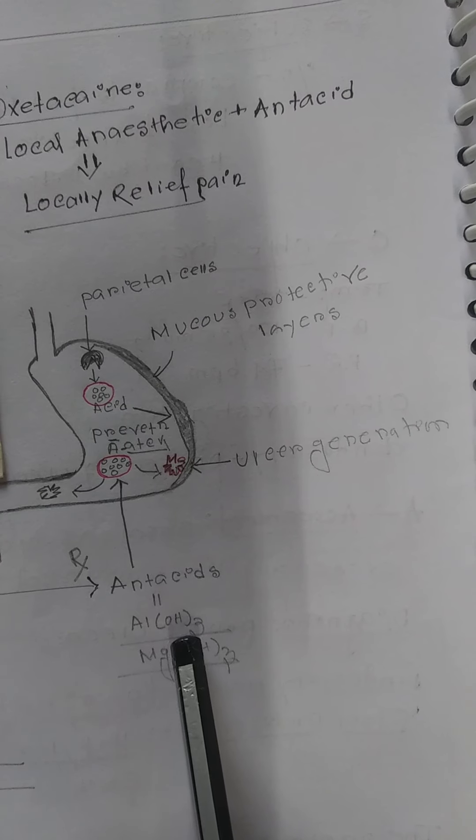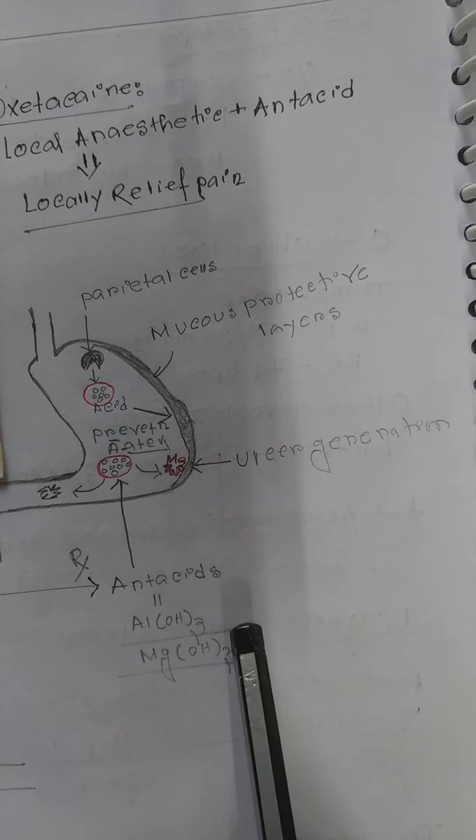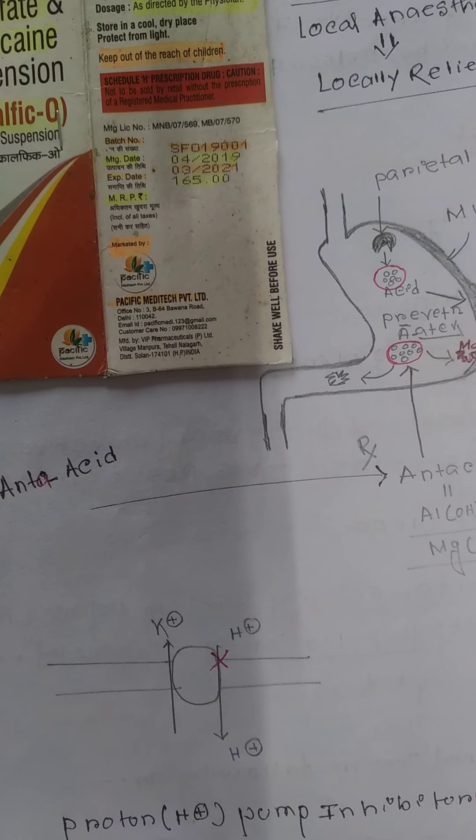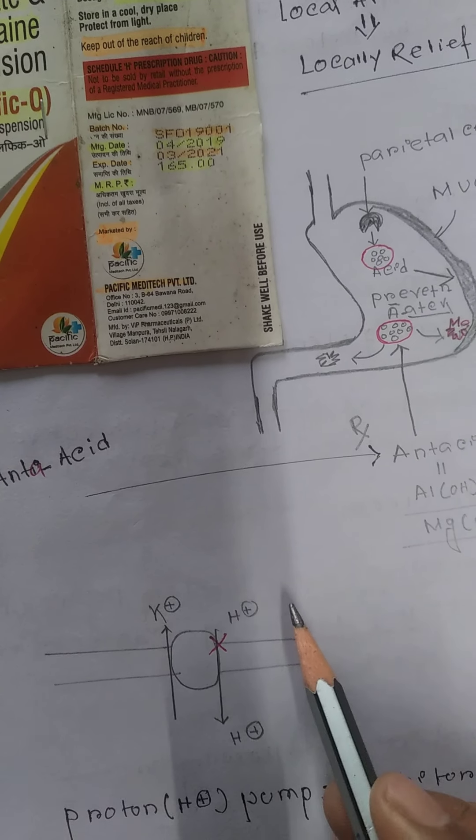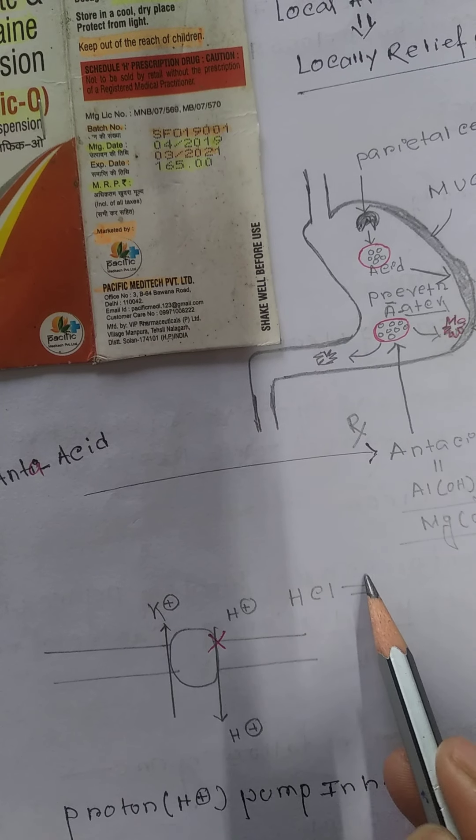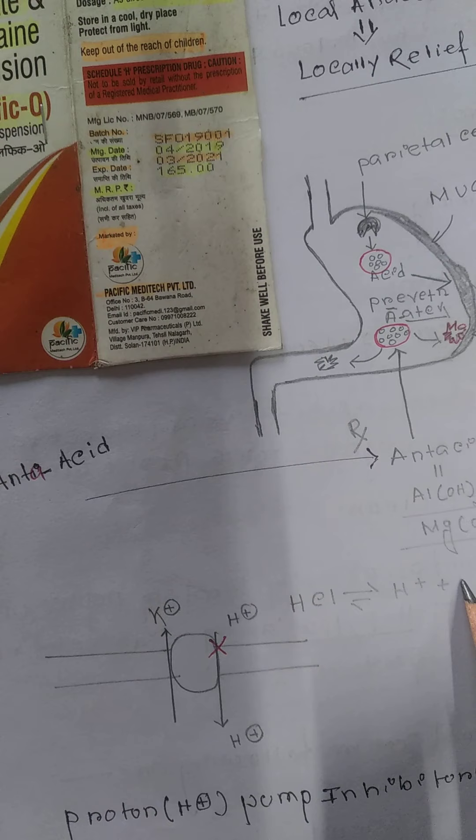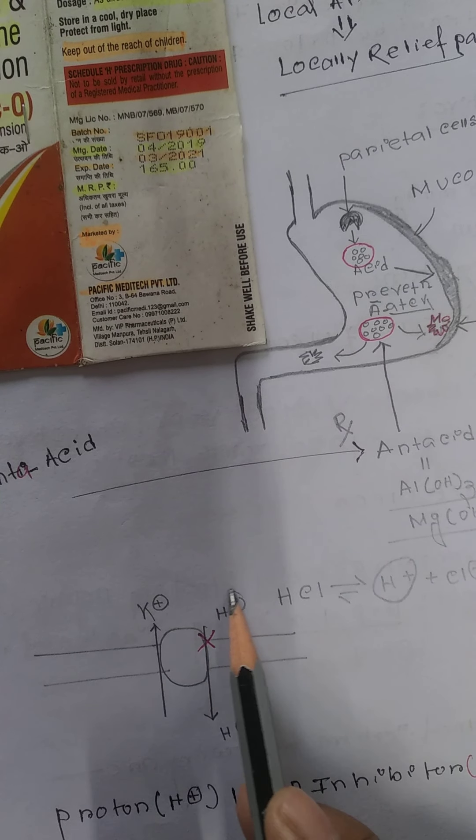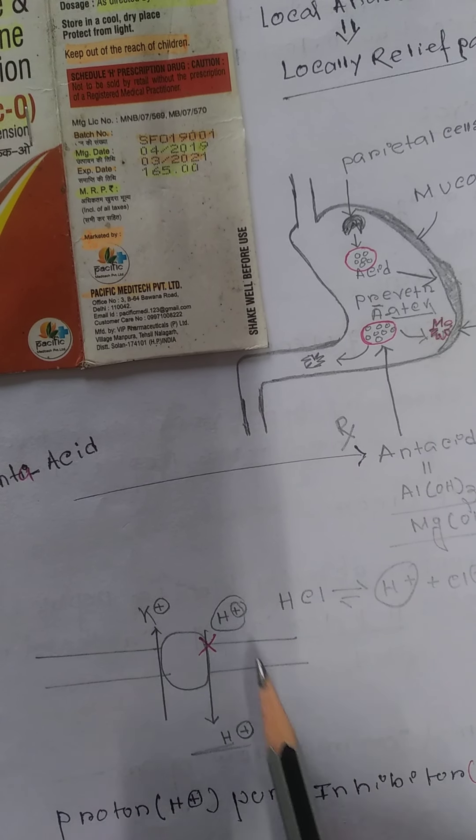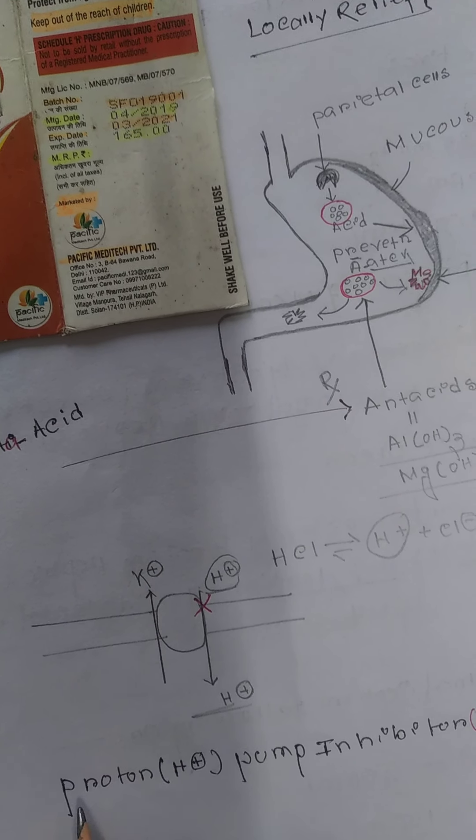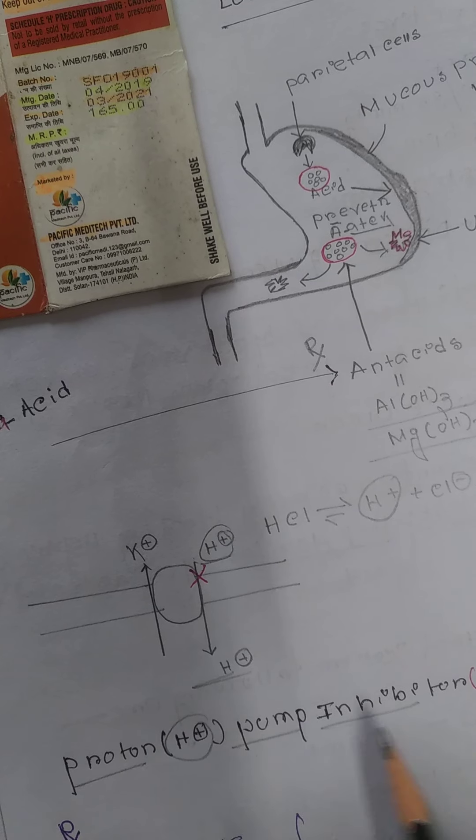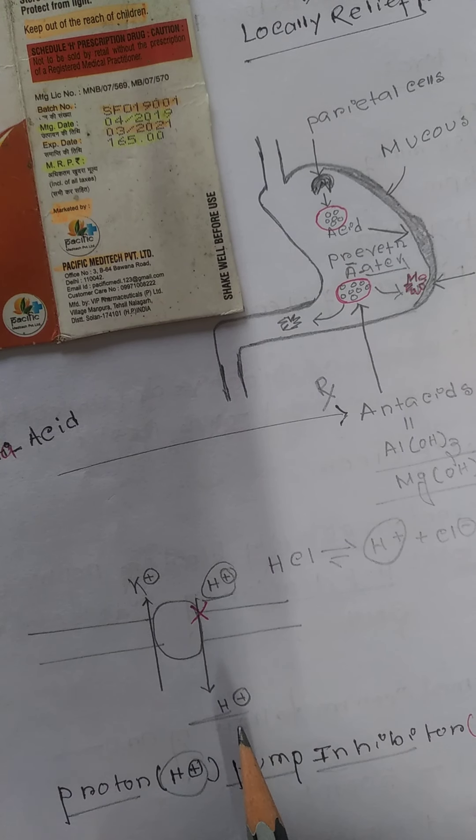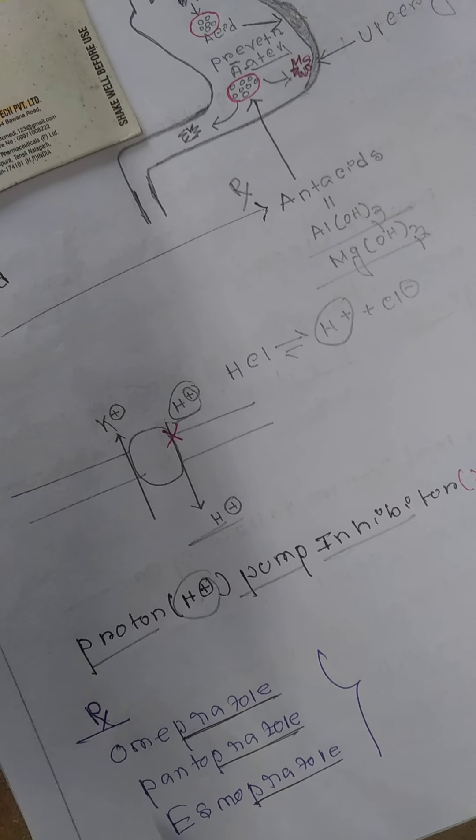For treatment, you can use antacids like aluminum hydroxide and magnesium hydroxide. Another drug class is proton pump inhibitors. In our stomach, HCL is released and breaks down into H+ plus Cl-. This H+ is called a proton. There's a channel and this proton is unable to enter into the cell, so that's called proton pump inhibitor.